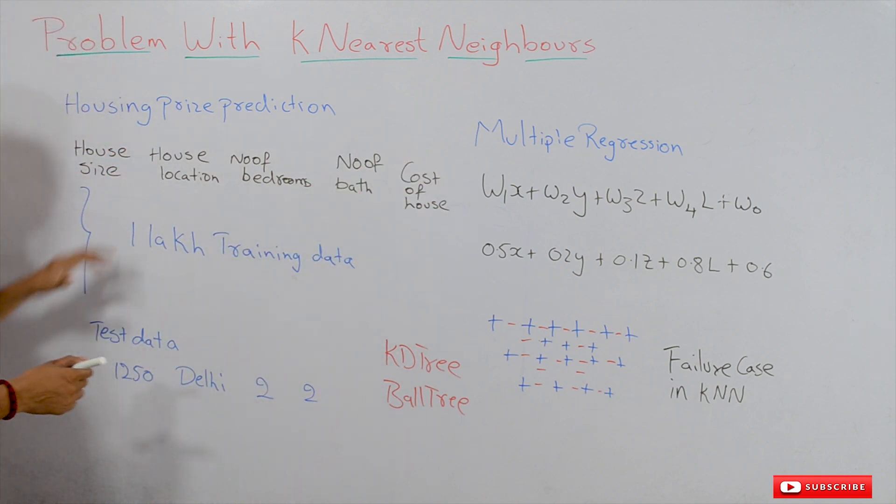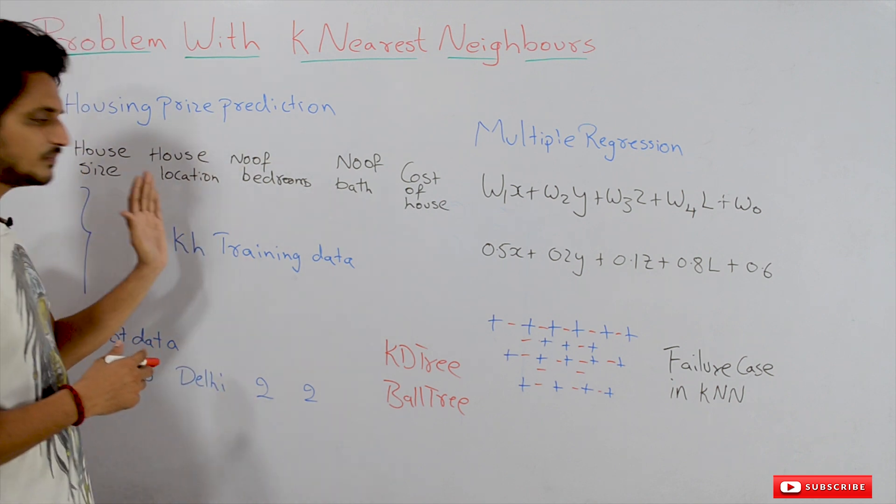In the training dataset, we have one lakh (100,000) training data points, and we are taking one testing data point. Suppose you apply multiple regression on this dataset.